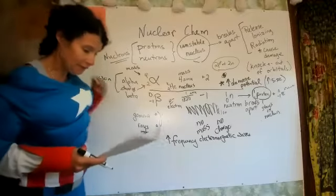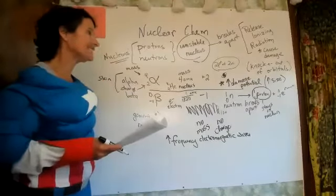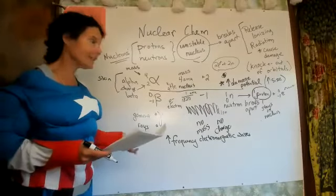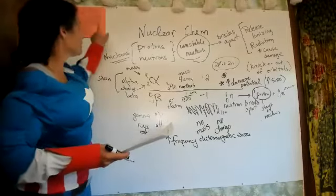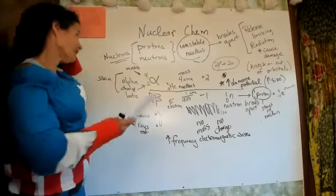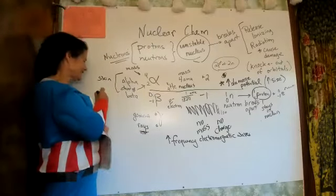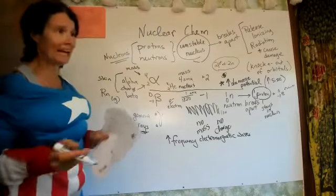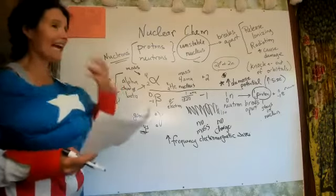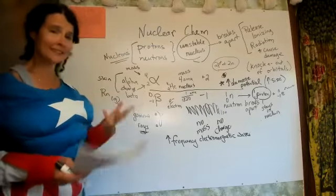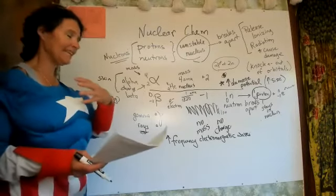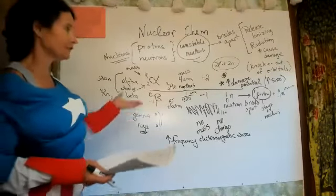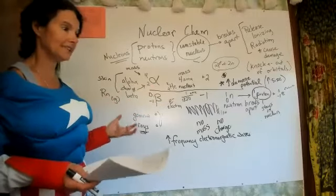The problem with alpha is that once it gets inside you, it can't get out either. Radon, element 86 (Rn), is a radioactive noble gas. Because it's a gas, you breathe it in, and then it gives off alpha particles inside your lungs — so you have alpha particles that are now stuck inside you.